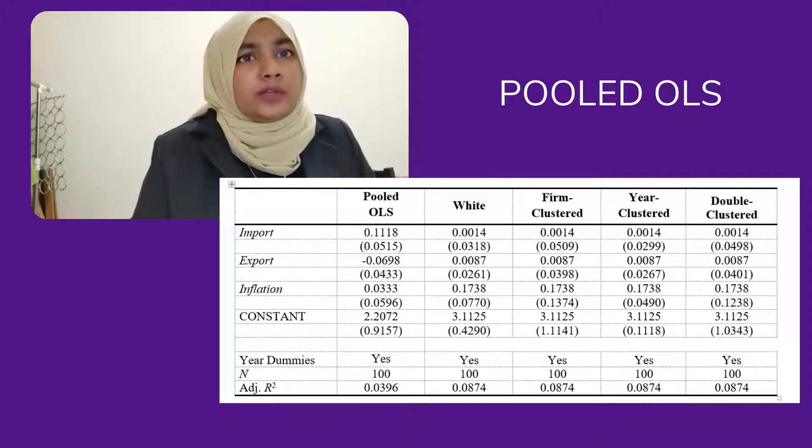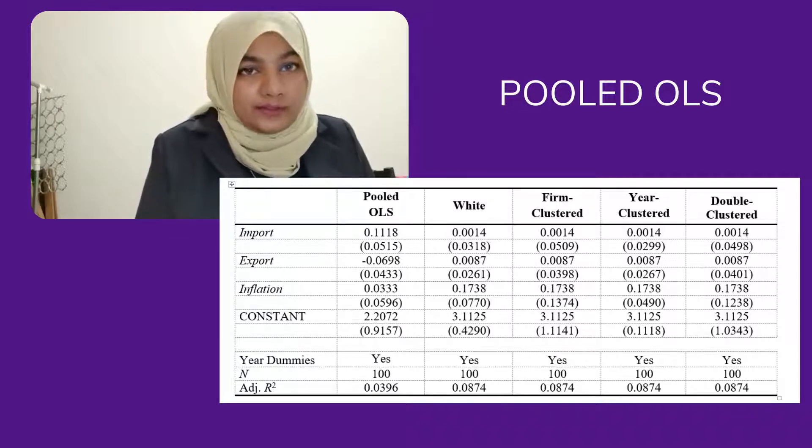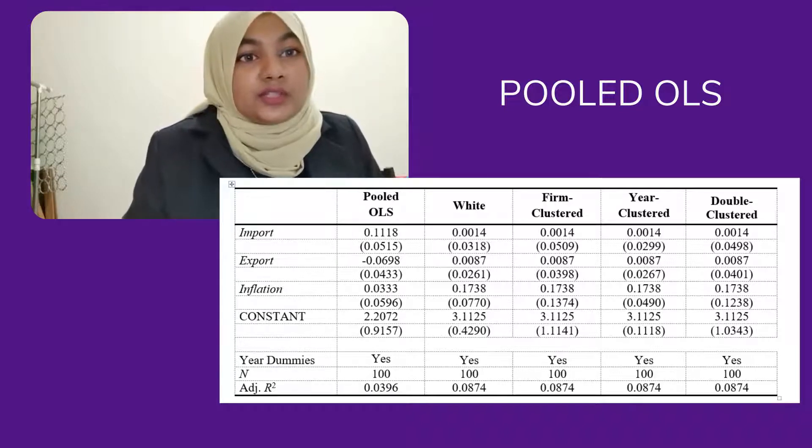According to Table 3, we can see the White test, which is the benchmark for our test. For instance, taking inflation, the White test error is 0.070. Meanwhile, the firm cluster is 0.13. The firm effect is larger than the White standard, showing the presence of firm effects.